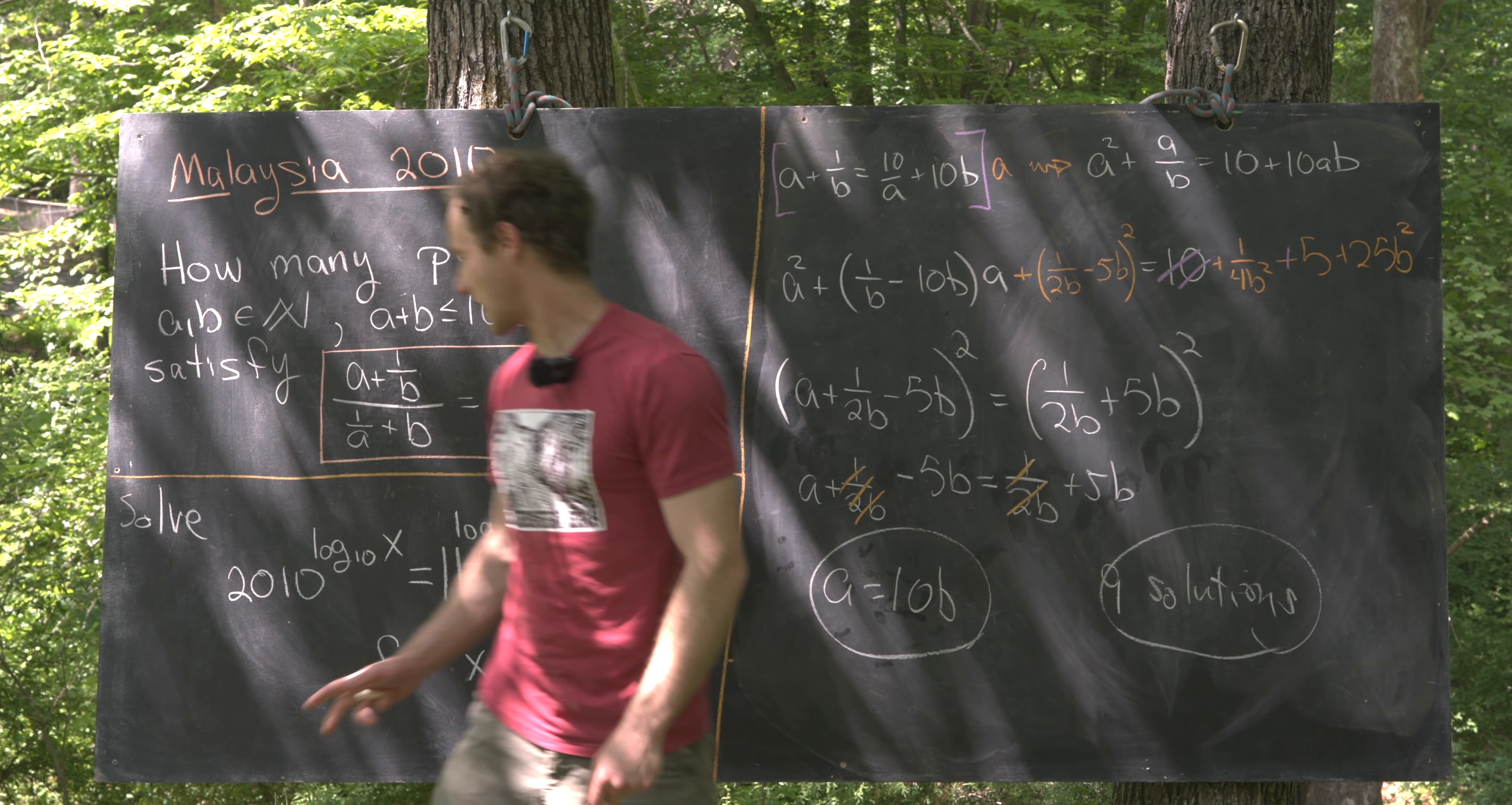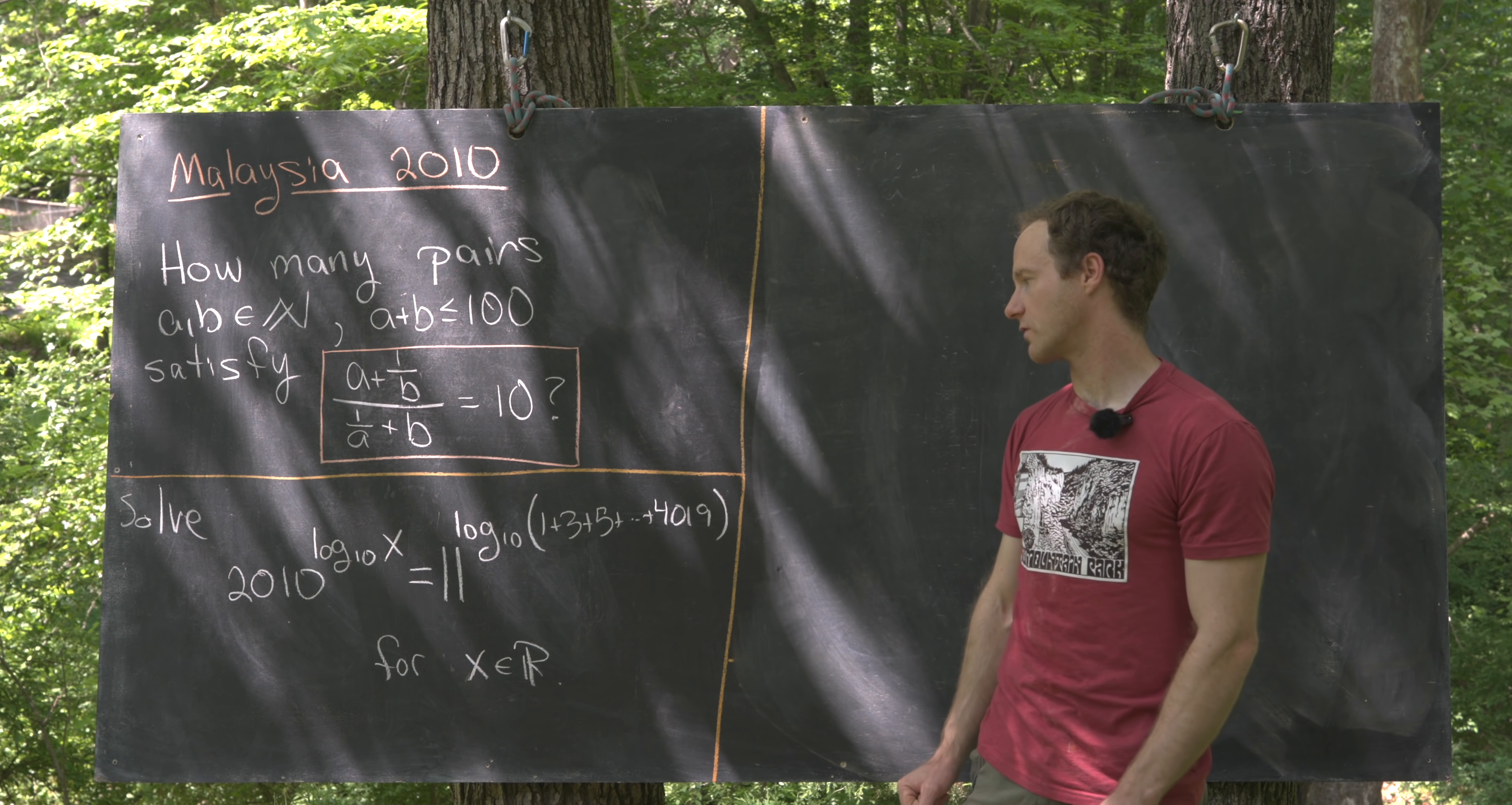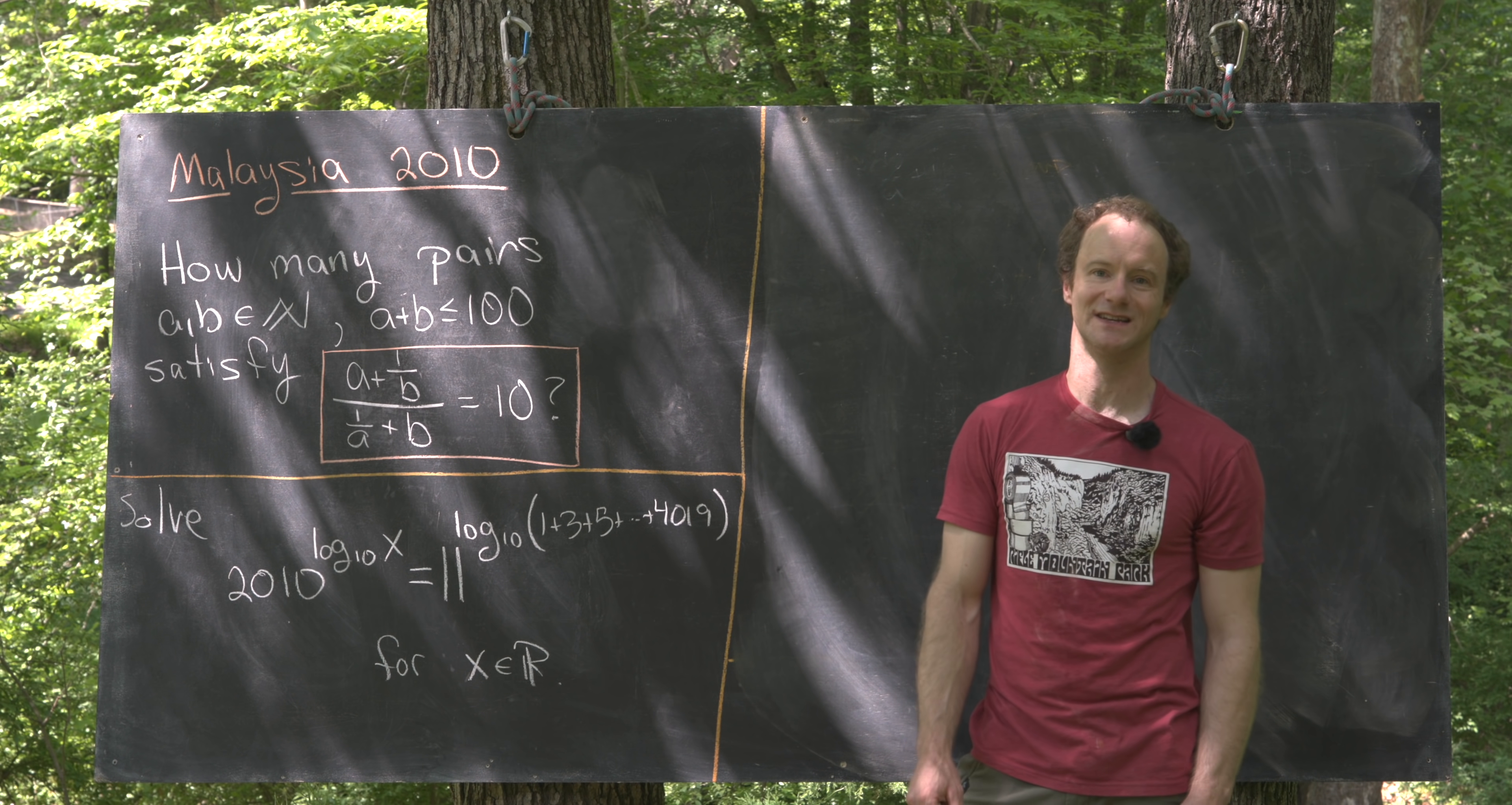So let's maybe get rid of this and we'll look at our second equation. So we just got done solving this first problem, now we're ready to look at the second. So we want to determine real numbers satisfying this kind of complicated exponential slash logarithmic equation. So we've got 2010 to the log base 10 of x equals 11 to the log base 10 of 1 plus 3 plus 5 all the way up to 4,019.